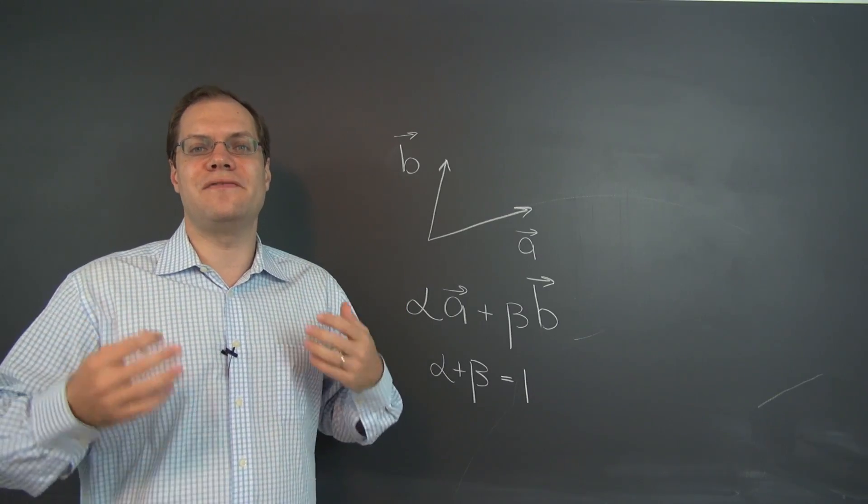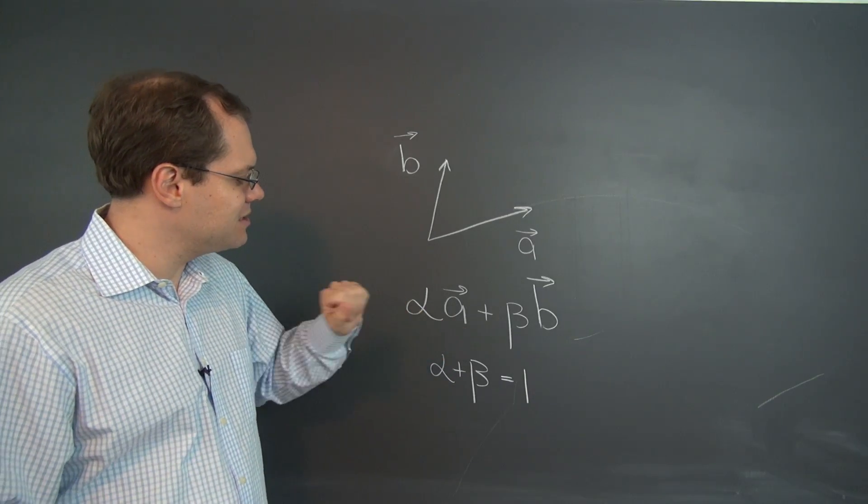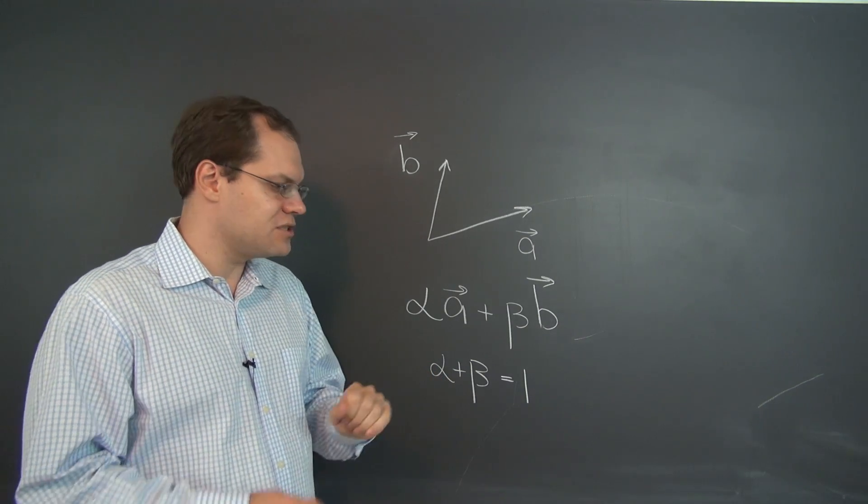So, can we visualize all the vectors that can be expressed by this linear combination with coefficients adding up to one?